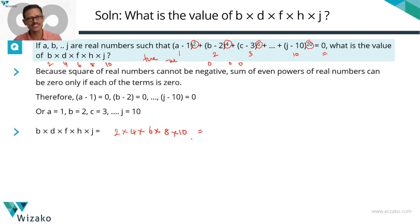You can find the product as is. I'm going to take a 2 common from each of these five numbers. So if I take 2 common from each, we'll be left with 2⁵ outside and then 1 × 2 × 3 × 4 × 5. Slightly easier to multiply. 20 into 3 is 60, into 2 is 120.